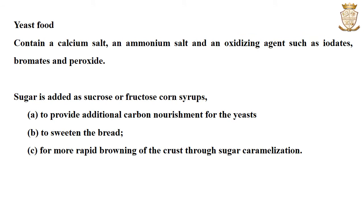The next ingredient is yeast food, which contains a calcium salt, an ammonium salt and an oxidizing agent such as iodate, bromate and peroxide. These molecules help to strengthen the colloidal structure of the wheat gluten. Ammonium acts as a nitrogen source for the yeast, and the oxidizing agent strengthens gluten and enhances its ability to hold gas released during dough formation.